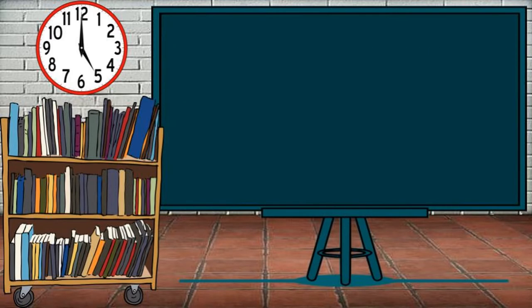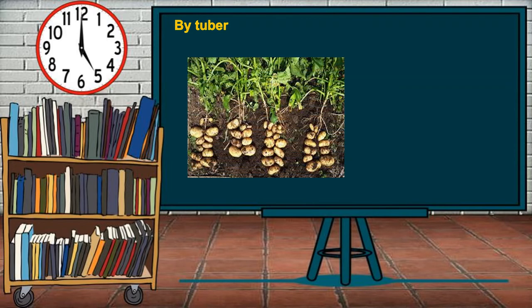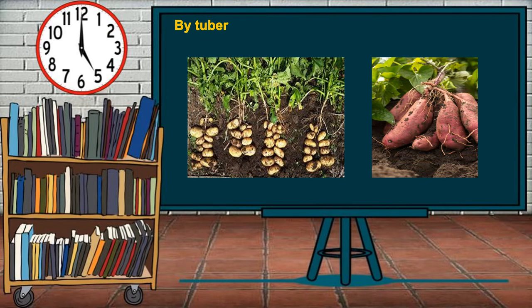Another natural method is by tuber — a fleshy portion of the underground stem that has buds. New plants grow from the buds, which are the eye-like structures on tubers. Examples are potatoes and kamote.